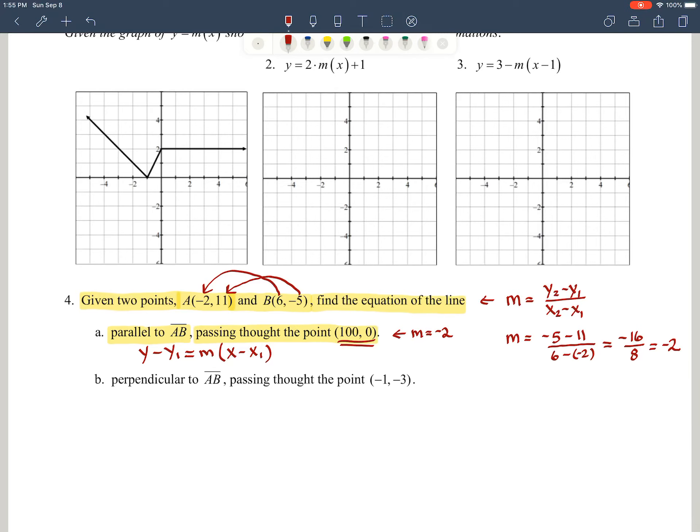So remember, we're using this point. So we're going to say here, y minus our y value, which is 0, should equal our slope negative 2 times x minus 100. And that should be our answer.